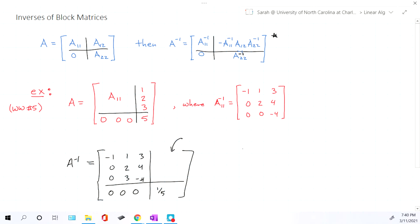Now, what goes into that position? This is your formula. Negative A11 inverse times A12 times the inverse of A22. So now we just have to pull those things. So the inverse of A11 is just that three by three matrix. So just copy down that three by three matrix.